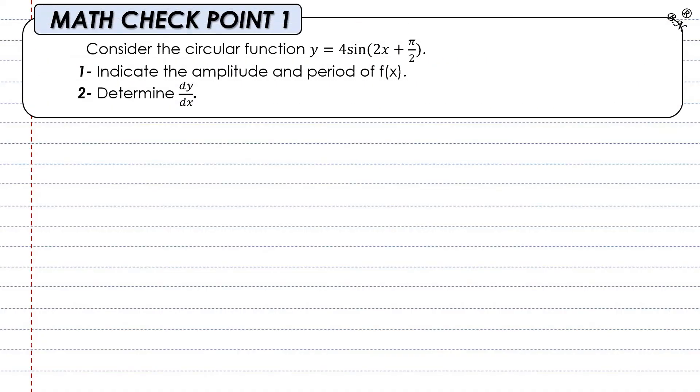Here's a quick checkpoint to make sure you understood what we discussed before. Consider the circular function y = 4 sin(2x + π/2). Indicate the amplitude and the period of f(x), and determine dy/dx. I would like you to solve this on your own, then as we always do, we'll dedicate another video to solve all these checkpoints.